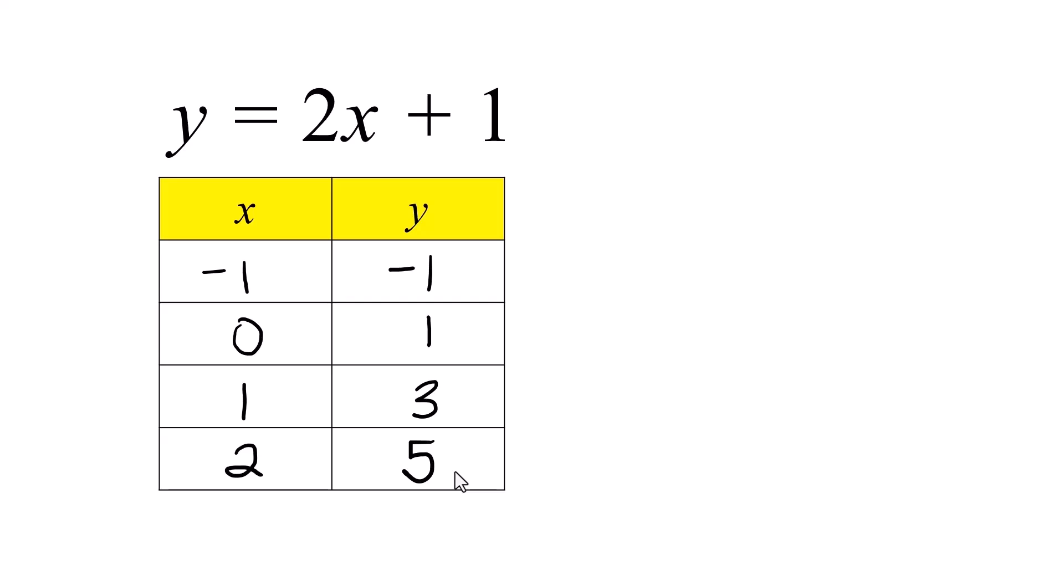Now, I have another video where we talked about what slope means. I'll link it up here in the corner, but there's a formula we use to assign a number to a line to talk about how steep it is. Slope is the change in y over the change in x. So let's figure out what that is.